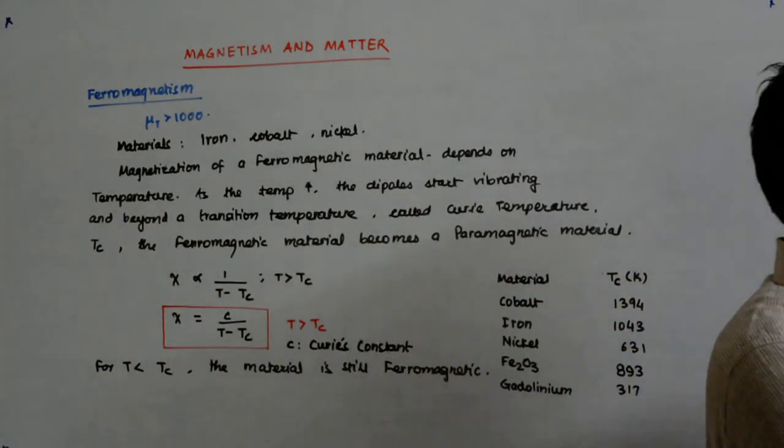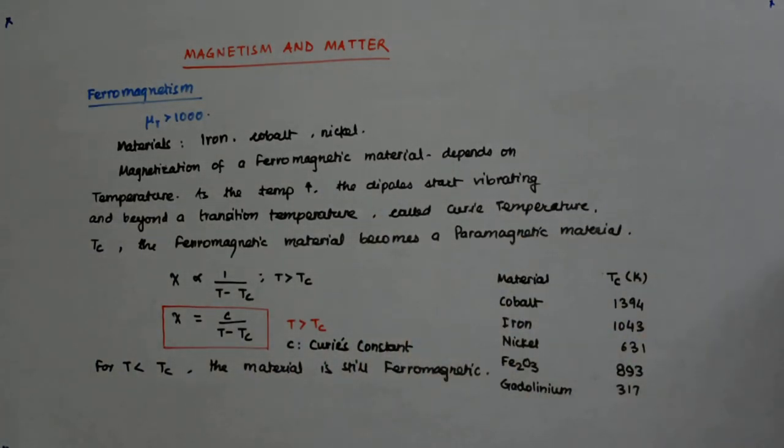317 is nothing but 44 degree, right? At 44 degree that means in summer it will suddenly become paramagnetic, right? Summer temperatures do go to say 48, 47, 48 degree centigrade.